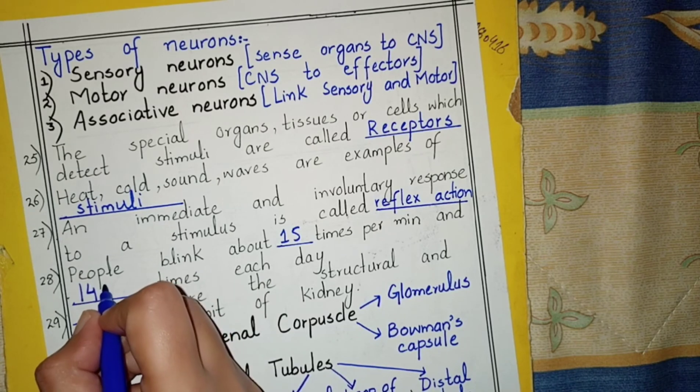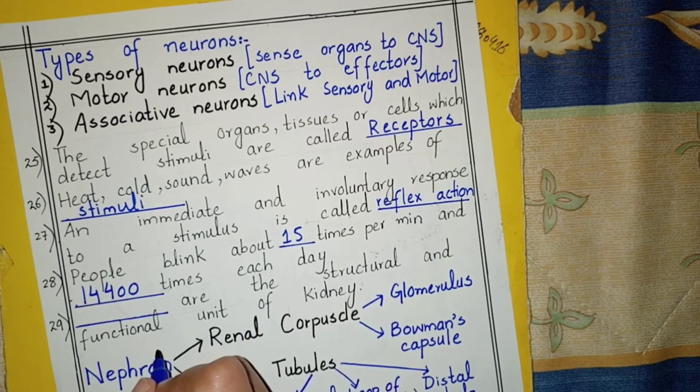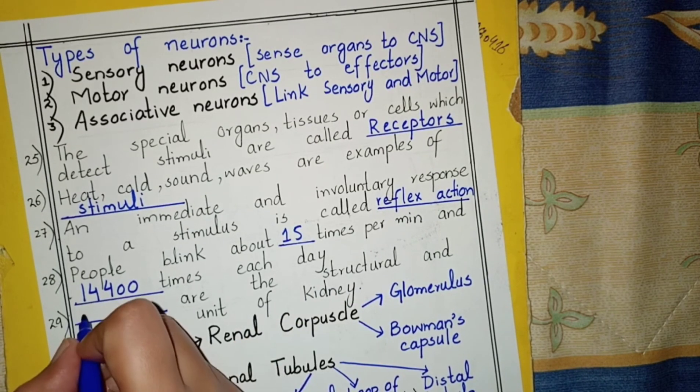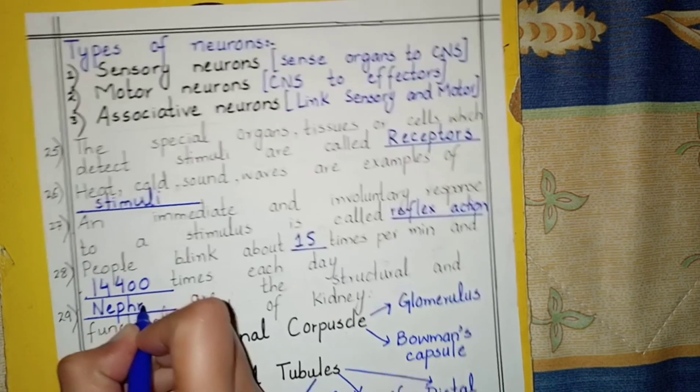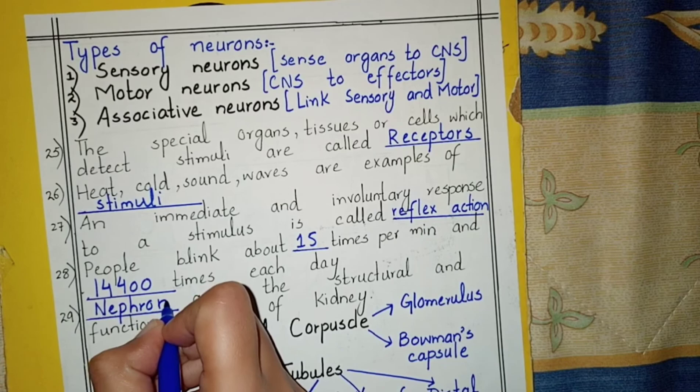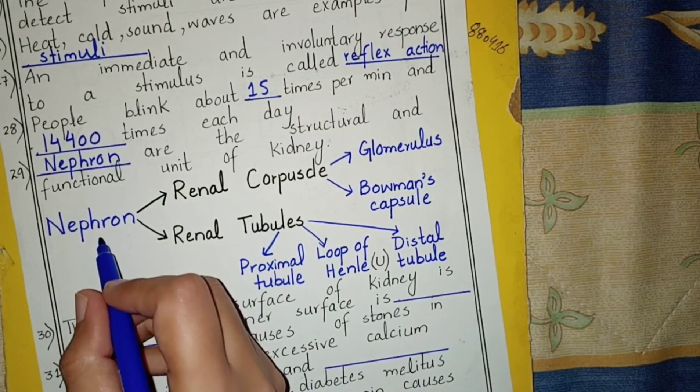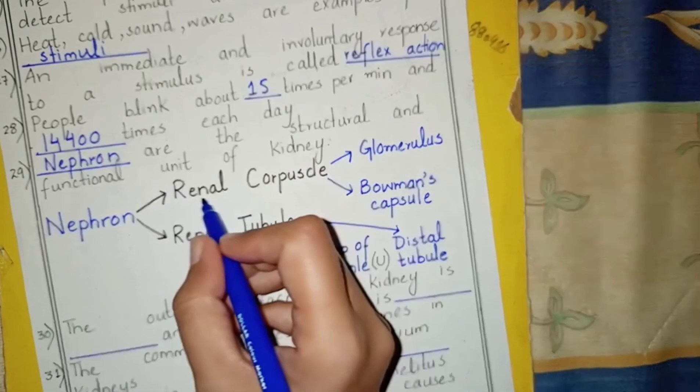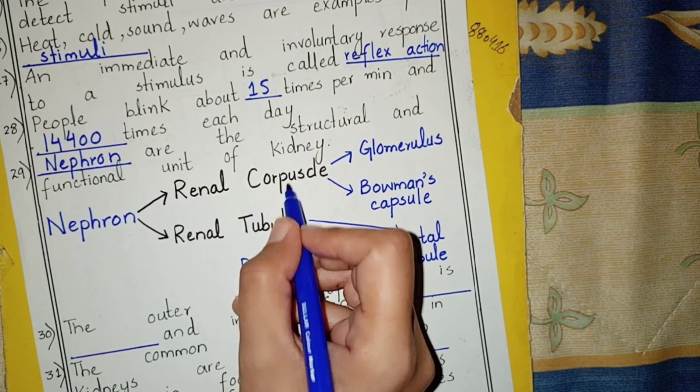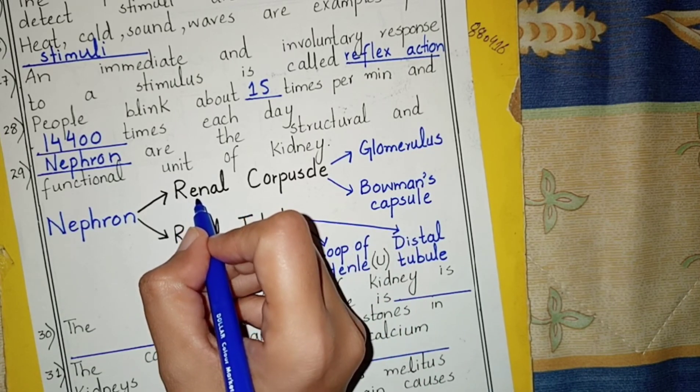The structural and functional unit of the kidney is the nephron. The nephron is divided into two parts: renal corpuscle and renal tubules. The word renal is for kidney.